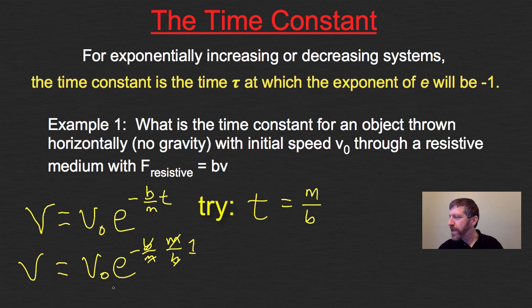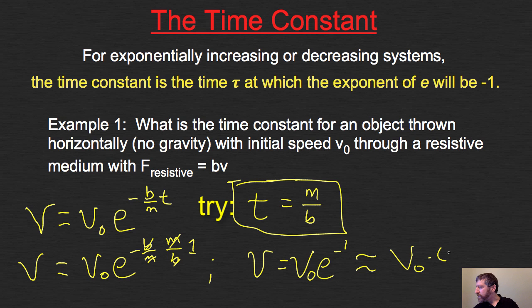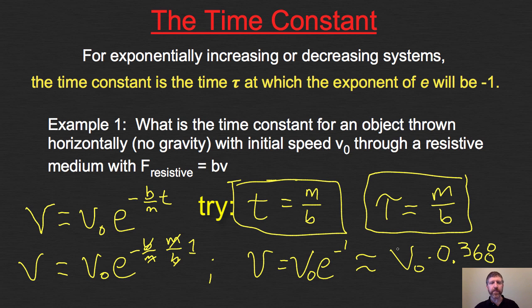The b's and m's cancel, leaving just negative one. Thus, at this time, V equals V0 * e^(-1), which is approximately V0 * 0.368. That's the time at which the speed is about 36.8% of V0, at m/b. So this is our time constant. Therefore, tau equals m/b for this system. When you figure out the units, they come out in seconds. Tau is m/b for this system.